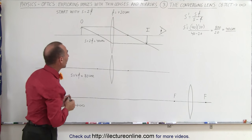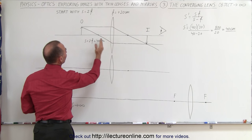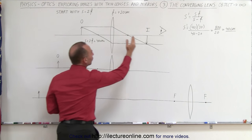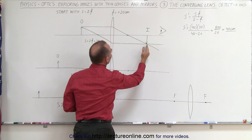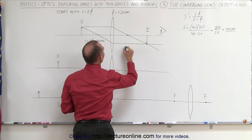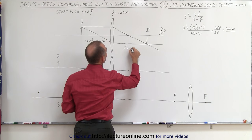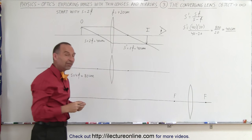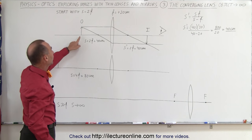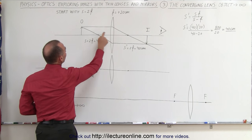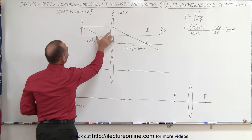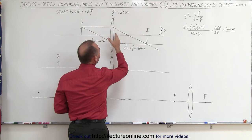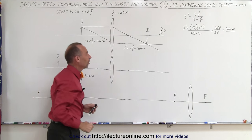Notice that when you place the object twice the distance of the focal length in front of a converging lens, the image will also appear 40 centimeters away from the lens but on the other side. So in this case, S' is equal to 2 times the focal length, which is also 40 centimeters.